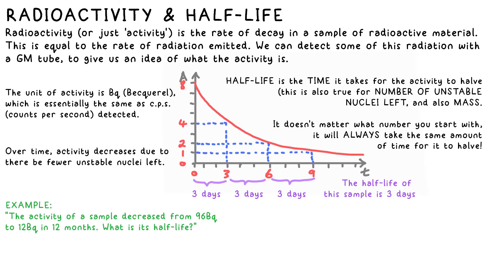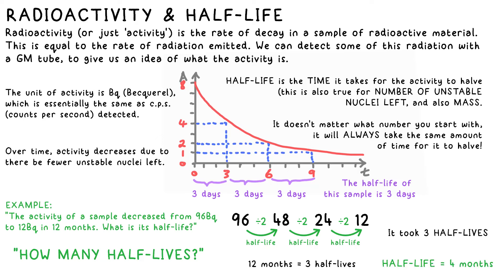You could be asked to calculate half-life. Let's say that we have a sample that started at 96 Becquerel activity and it fell to 12 Becquerel after one year, 12 months. The question you always have to ask is how many half-lives? You don't do 96 divided by 12, but instead count how many times you have to halve it to get to the second number. One half-life, 48 Becquerel. Two half-lives, 24. Three half-lives, 12. It took three half-lives to decrease to 12 Becquerel. So if 12 months is three half-lives, that must mean that one half-life is a third of that. 12 divided by three, the half-life is four months.